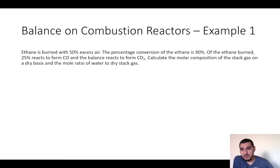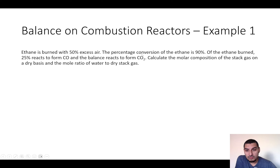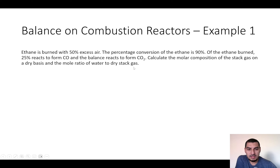In this example we have ethane as a fuel and it's being burned with 50% excess air. The conversion of ethane is 90%, meaning that 10% of ethane is not burned in the reactor. Of the ethane burned — 25% reacts to form carbon monoxide, and the balance reacts to form carbon dioxide. We want to calculate the molar composition of the stack gas on a dry basis and the molar ratio of water to dry stack gas.